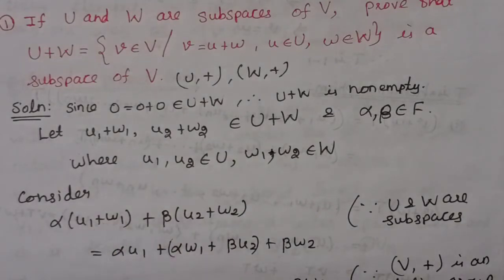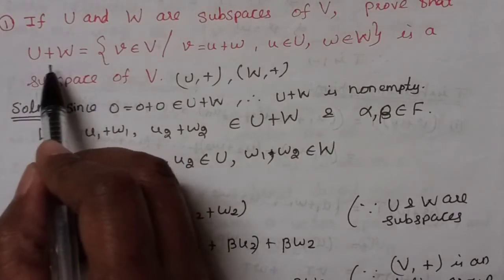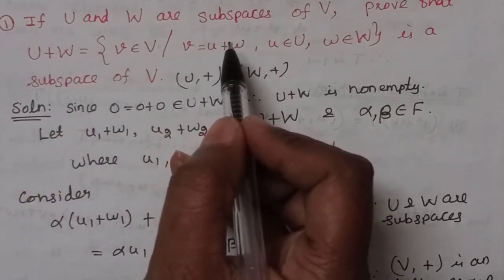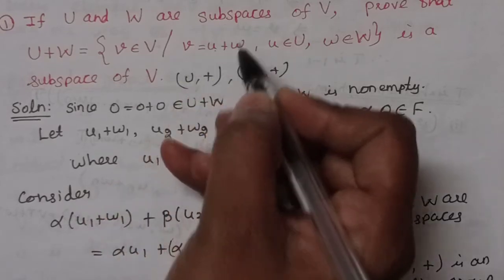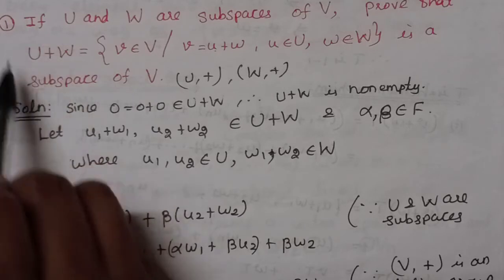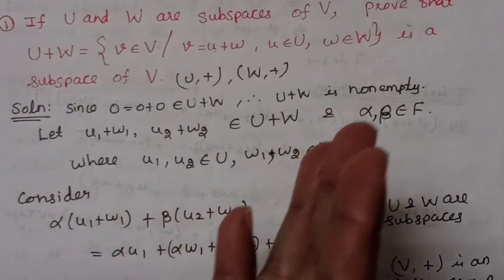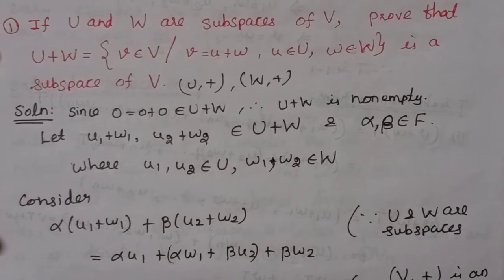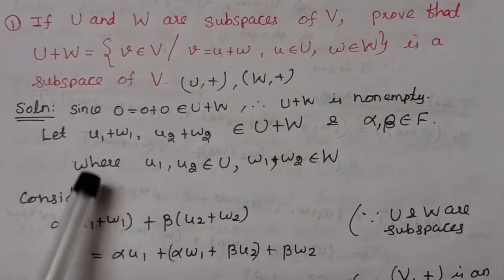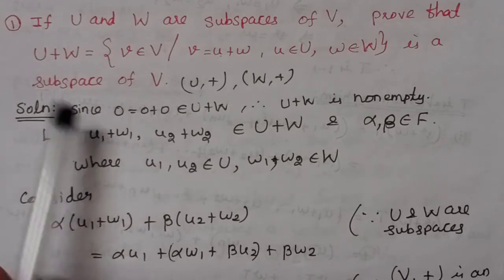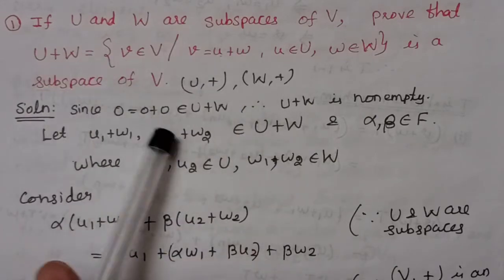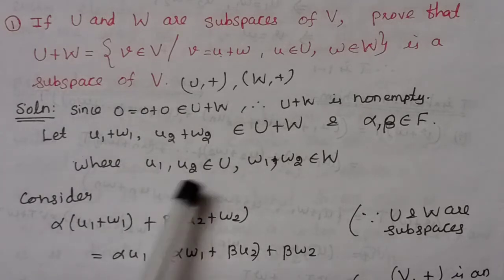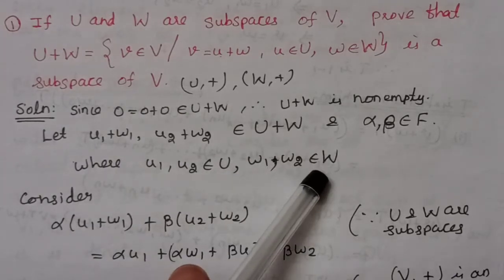Take two elements from U plus W: v1 = u1 plus w1 and v2 = u2 plus w2, where u1, u2 belong to U and w1, w2 belong to W. Let scalars alpha and beta belong to field F.